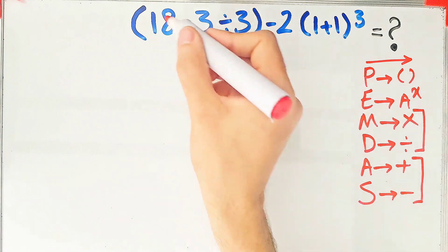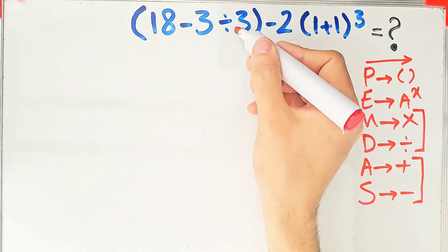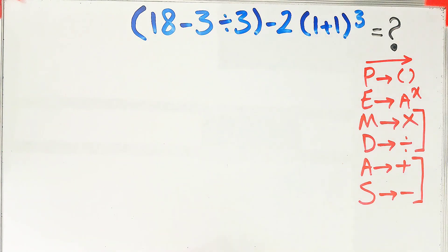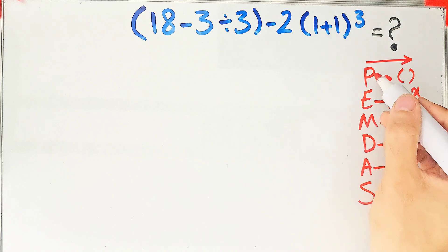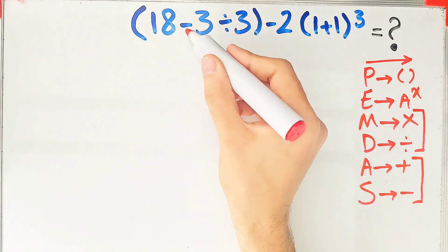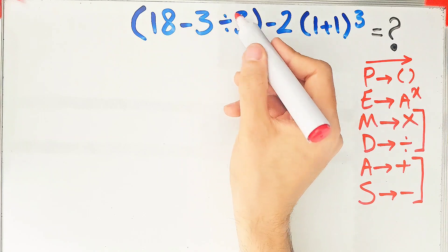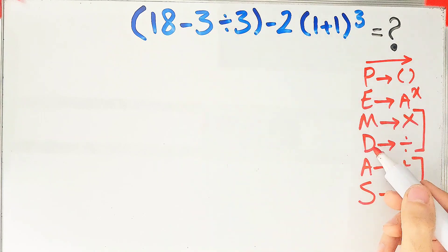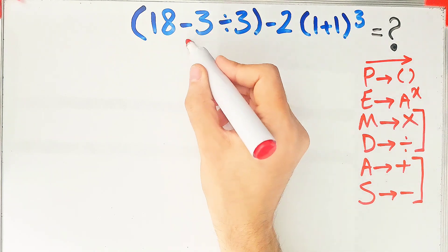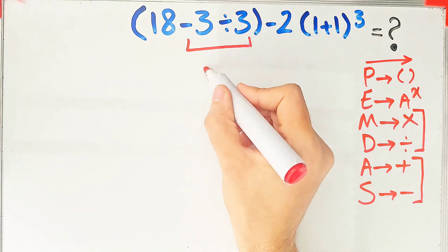In this question we have parenthesis, subtraction, division, addition, and exponent. First we simplify the parenthesis. Inside the parenthesis we have subtraction and division. We do the division first because division has higher priority than subtraction. Negative 3 divided by 3 equals negative 1.